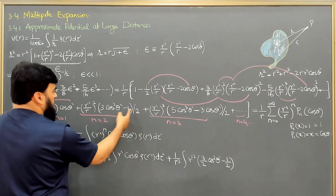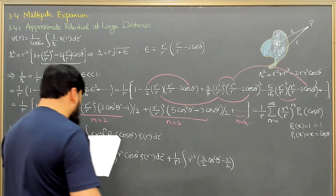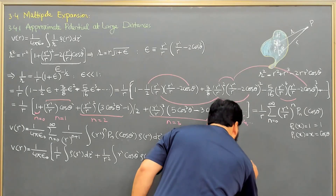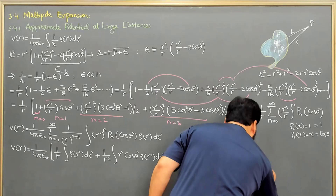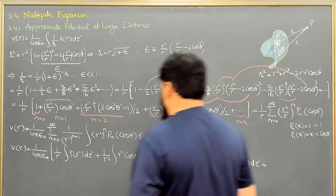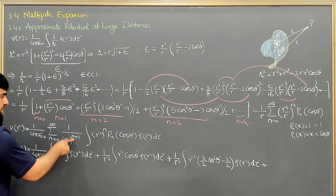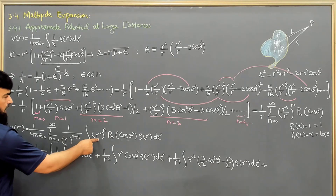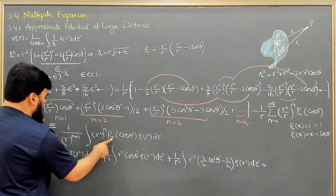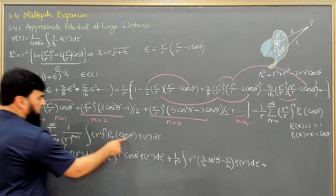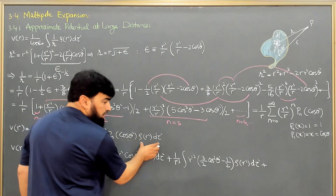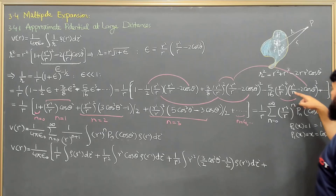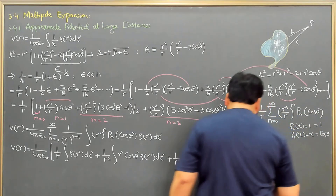So 1/2 is factored out, giving 3/2 minus 1/2, and the remaining terms are rho(r prime) d tau prime, plus higher-order terms. When n equals 3, the term becomes 1 over r to the 4th, with r prime cubed, and P_3 of cos theta, with its corresponding value written out, and so on.